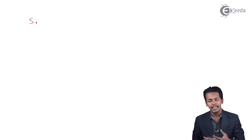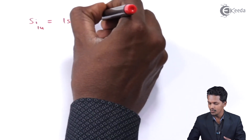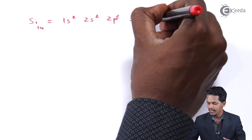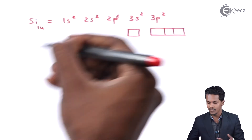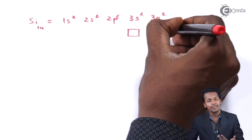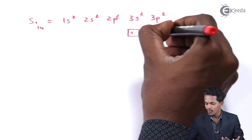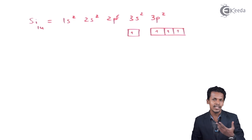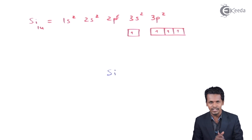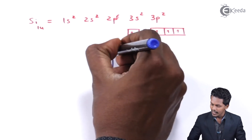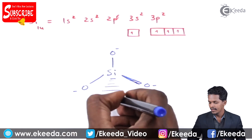Silicon has an electronic configuration of 1s², 2s², 2p⁶, 3s², 3p². The p sub-shell has 3 orbitals and 2 electrons on it. One electron that is paired can be shifted towards the pz orbital, giving silicon a valency of 4. The SiO4⁻ ion has an sp³ hybridized structure, and that is the reason a tetrahedral geometry is obtained.